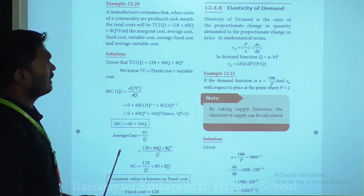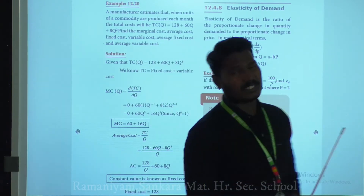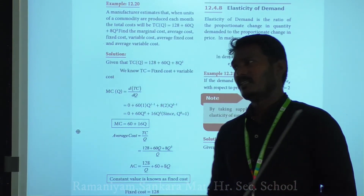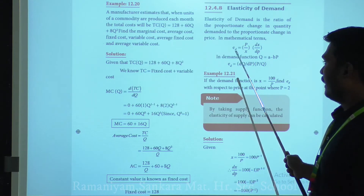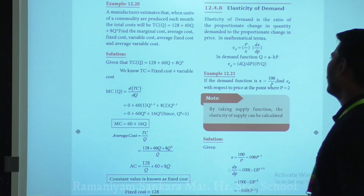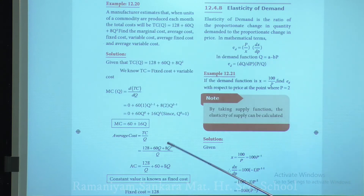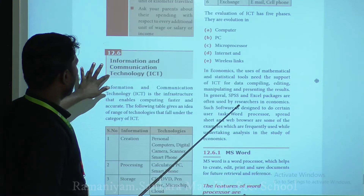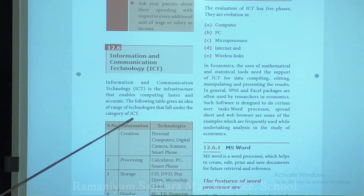Next, elasticity of demand. Elasticity of demand is the ratio of the proportionate change in quantity demanded to the proportionate change in price. Ed = (p/x)·(dx/dp). In the demand function q = a − bp.